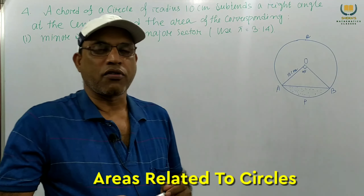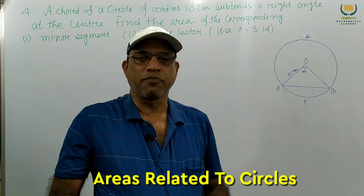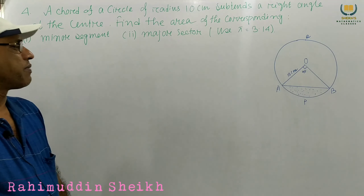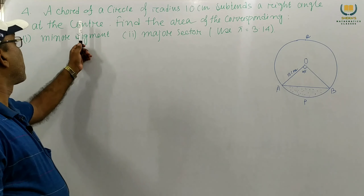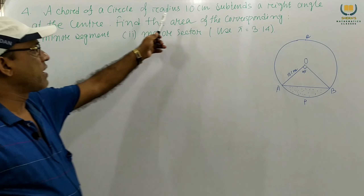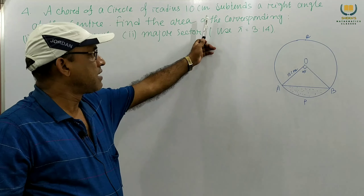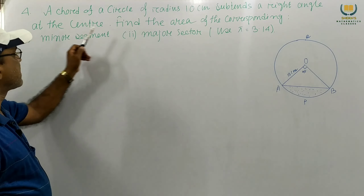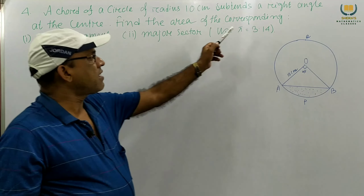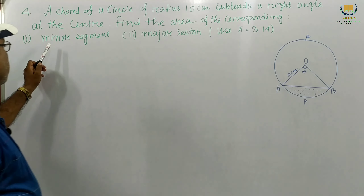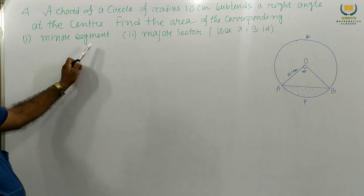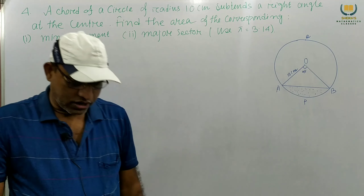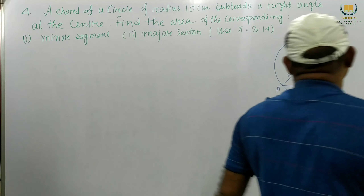Dear students, today we consider problem number 4, exercise 12.2. A chord of a circle of radius 10 centimeters subtends a right angle at the center. Find the area of the corresponding minor segment and major sector. Use pi equal to 3.14.